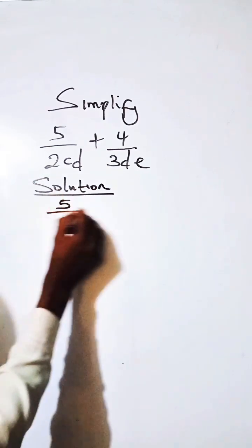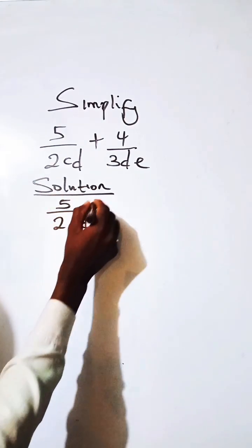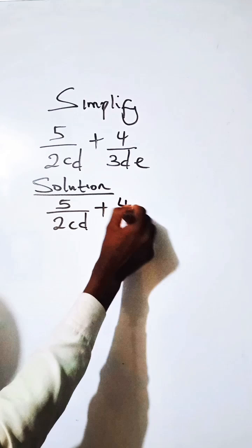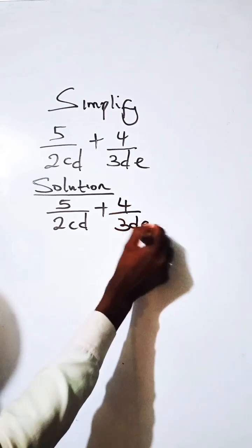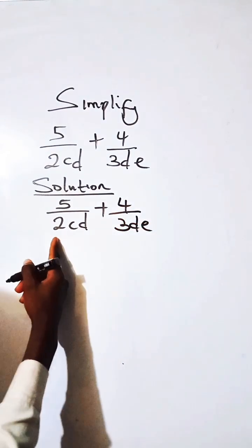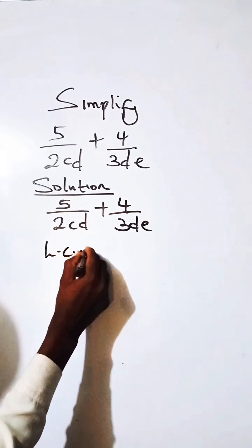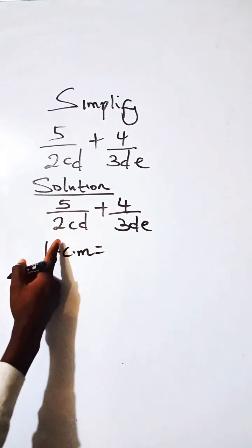For 5 over 2CD plus 4 over 3DE, what do we do? Let us approach it using the LCM approach, which is the least common denominator.